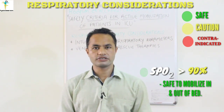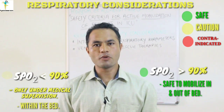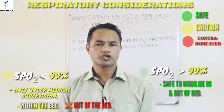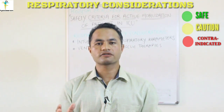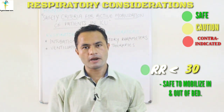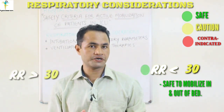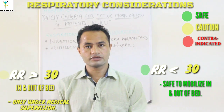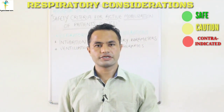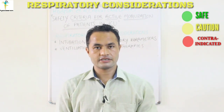For SpO2, patients having SpO2 greater than 90% can be mobilized in and out of the bed without any potential risk, whereas patients having SpO2 less than 90% can be mobilized within the bed under sufficient medical supervision but should not be mobilized out of the bed. Patients having a respiratory rate less than 30 can be mobilized in and out of the bed with no potential risk, whereas those with a respiratory rate higher than 30 can be mobilized under sufficient medical supervision.